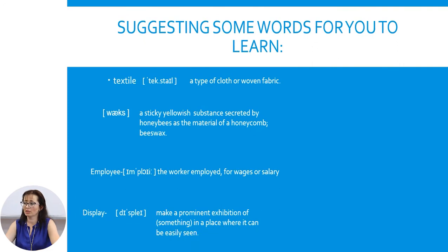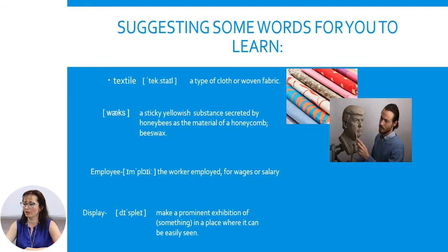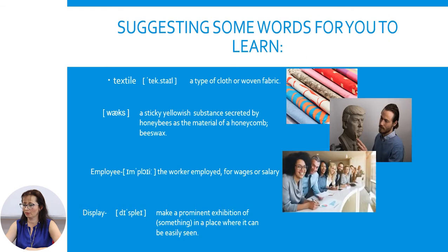Now, some words for you to learn. Textile: a type of cloth or woven fabric, like you see in the picture. Wax: a sticky yellowish substance secreted by honey bees as the material of the honeycomb. Employee: a worker employed for wages or salary, like you see in the picture. Display: to make a prominent exhibition of something in a place where it can be easily seen.